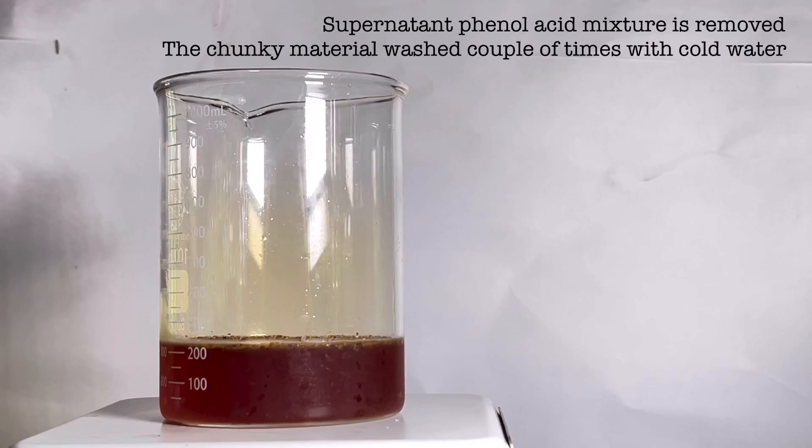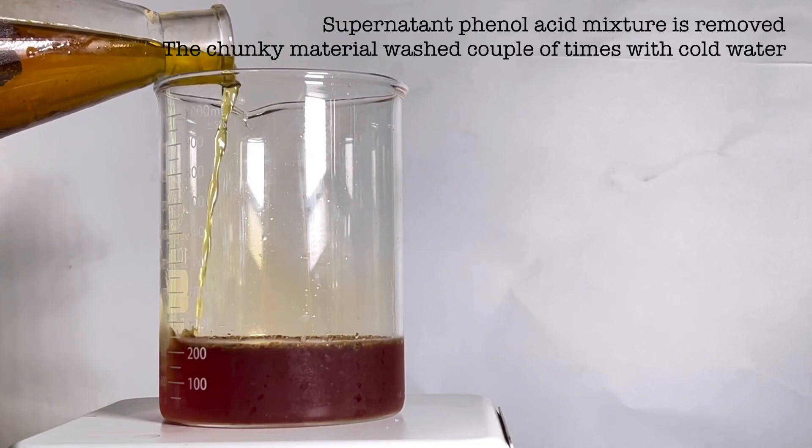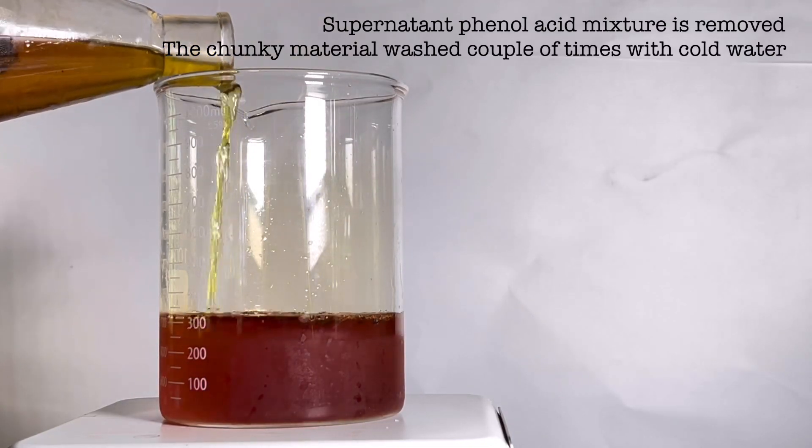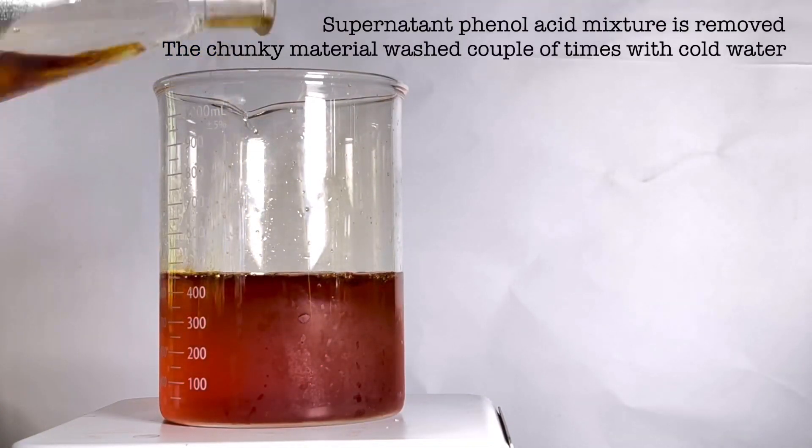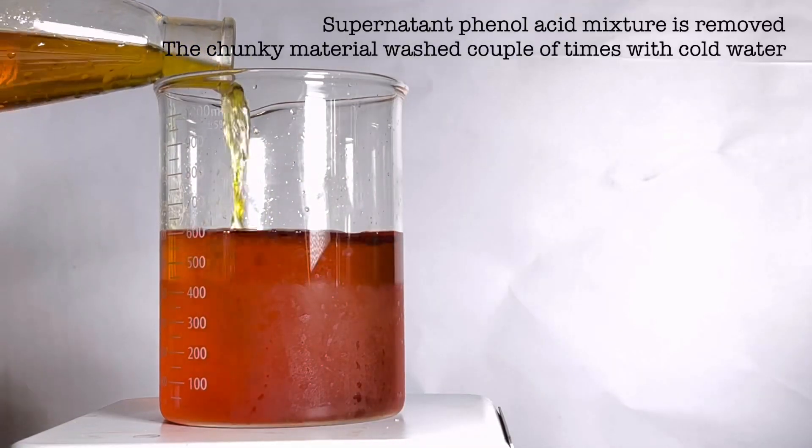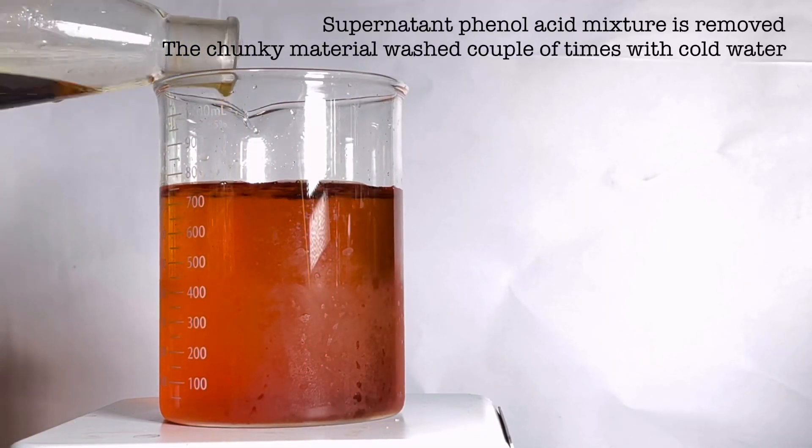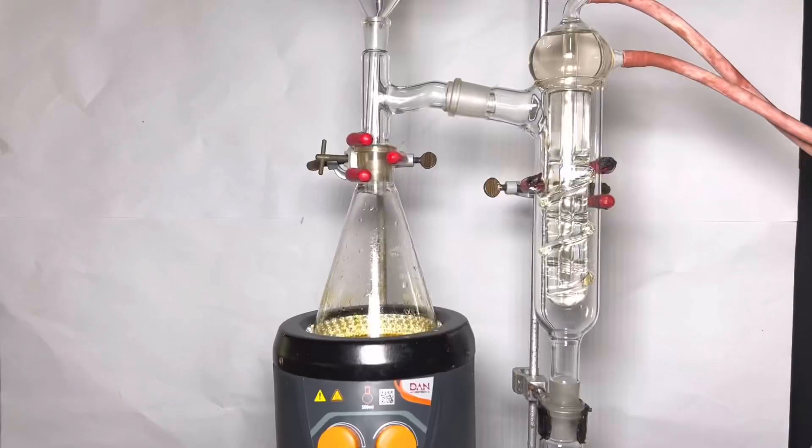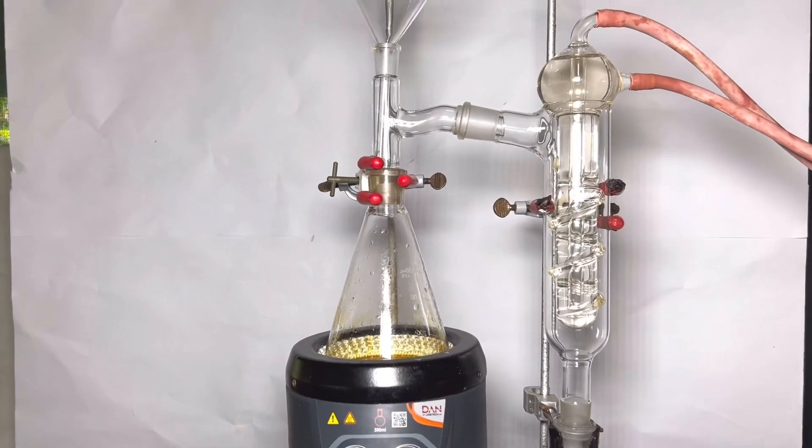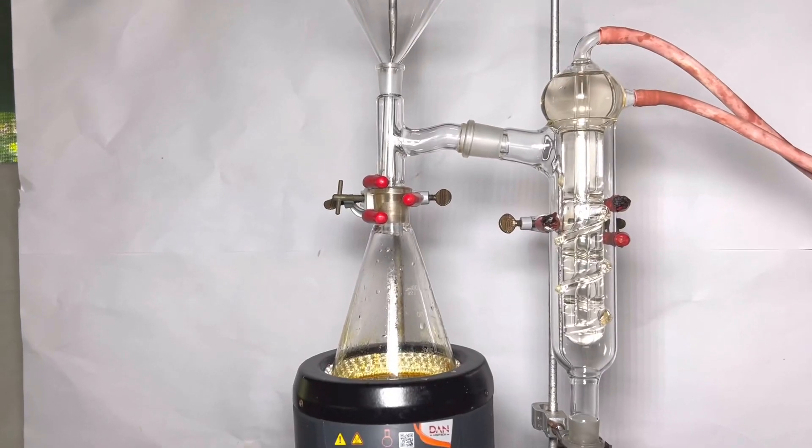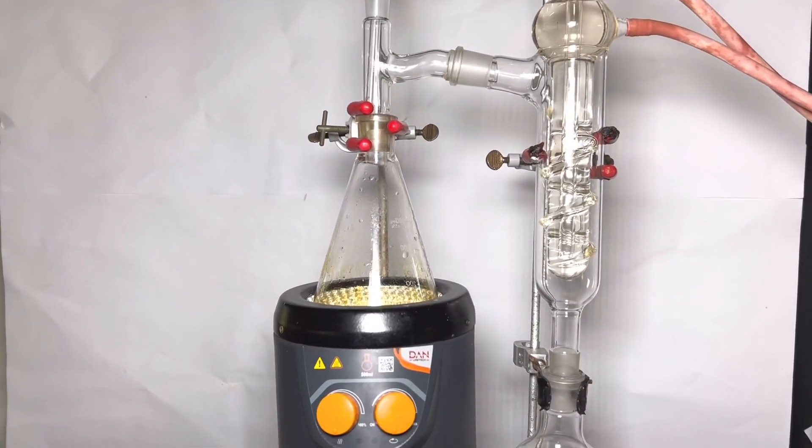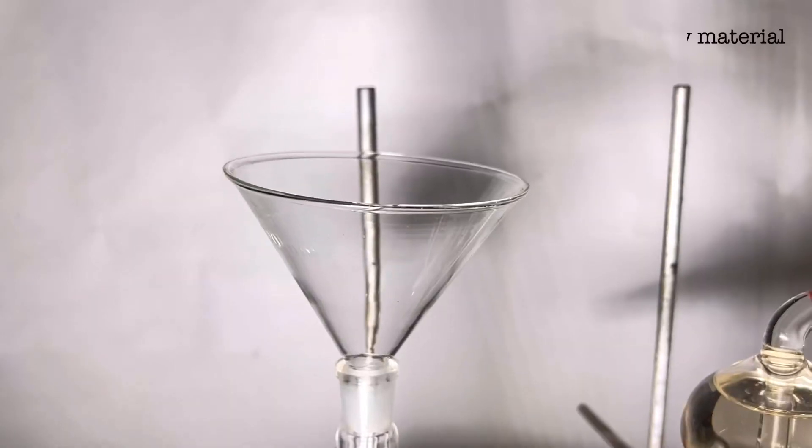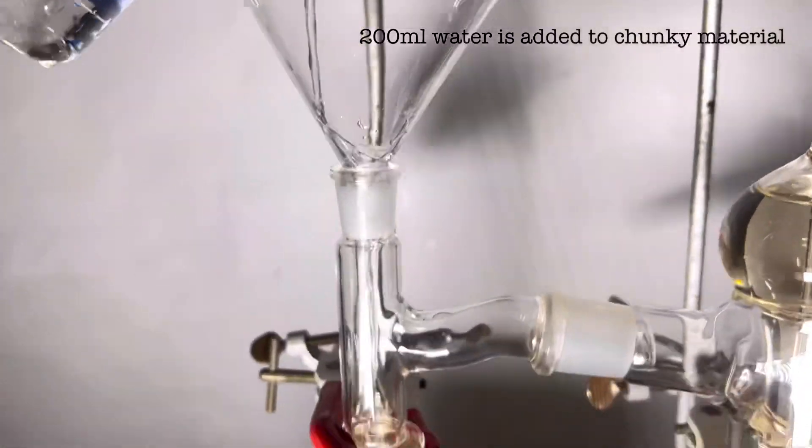Then the chunky materials were washed a couple of times with cold water. This helps to clear out all the acid from the product. Now the crude product is taken up into a distillation system. The flask is placed in a heating mantle and around 200 ml of water is added to the distilling flask.